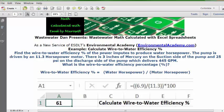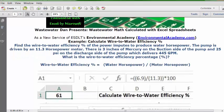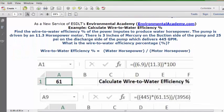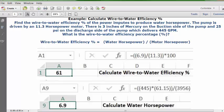But as a bonus, let me show you the formula to calculate the water horsepower. You can see the answer 6.9. The 6.9 is what we've inserted into the formula right above here to calculate the wire-to-water efficiency.